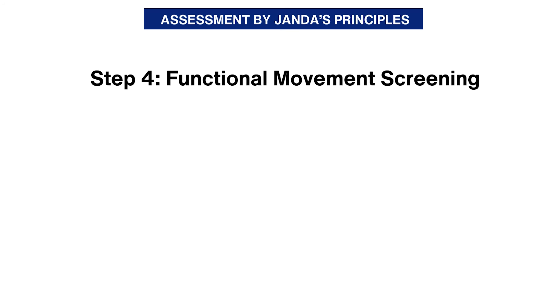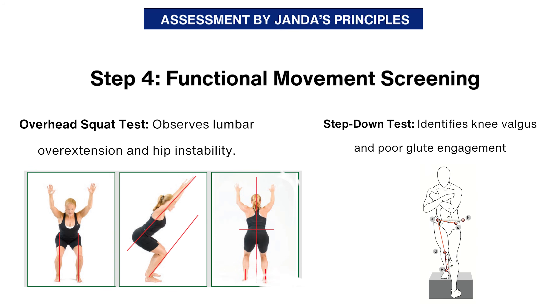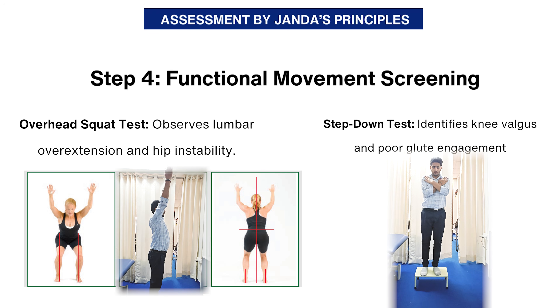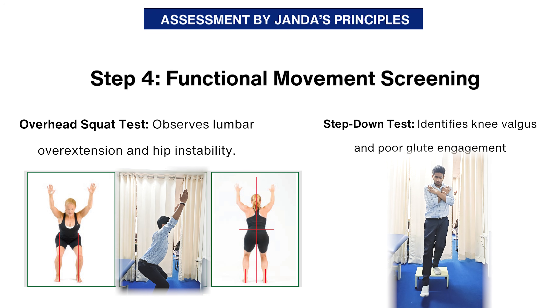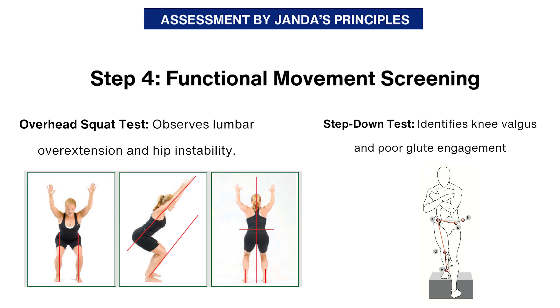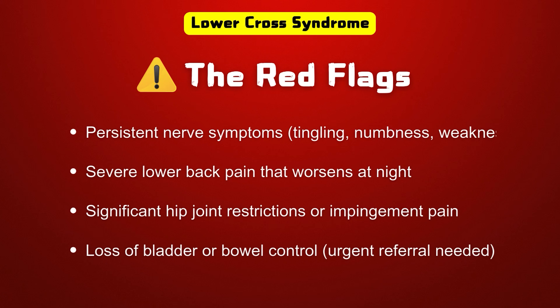The fourth step is the functional movement screening. This involves the overhead squat test and the step down test. In the overhead squat test, pelvic alignment and hyperlordosis is observed in different planes in a semi-squat position. In the step down test, stability while stepping down is noted to check glute strength. These tests will help pinpoint the exact muscular imbalances contributing to lower crossed syndrome.